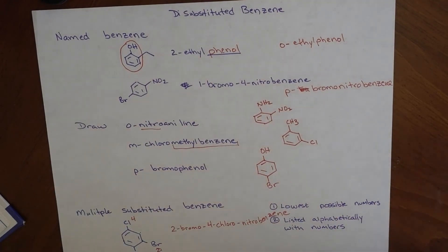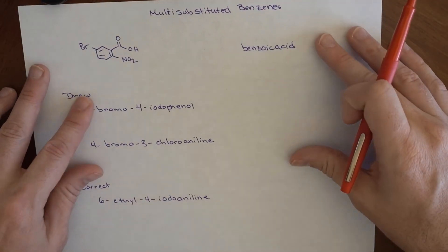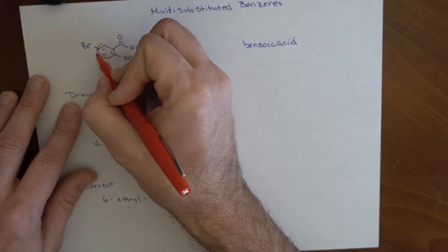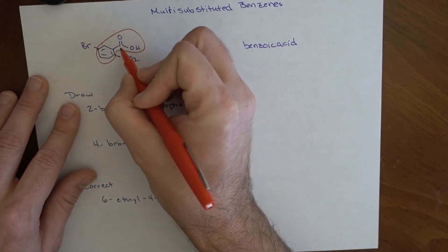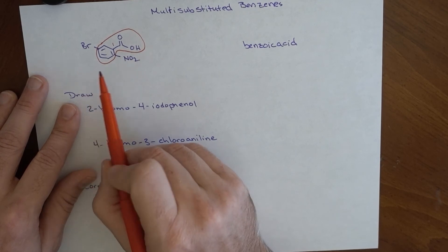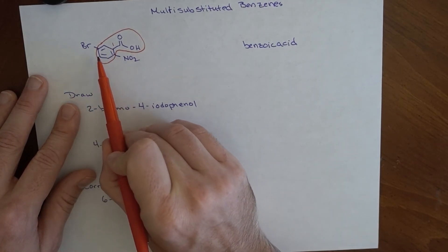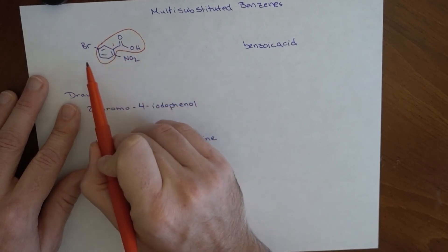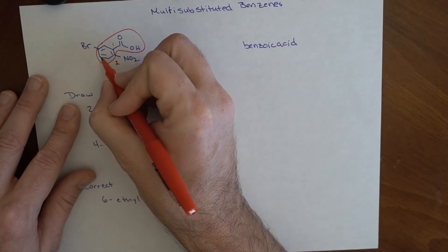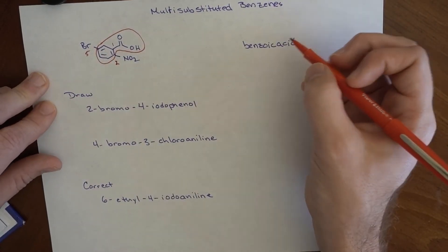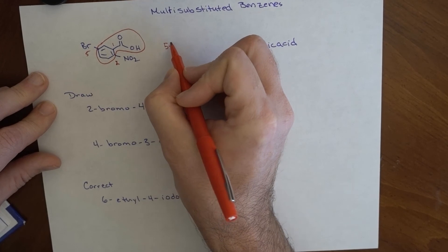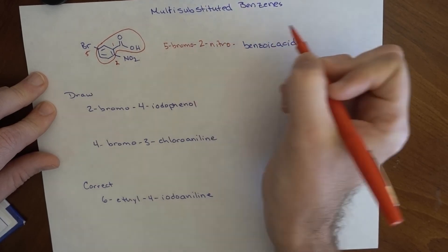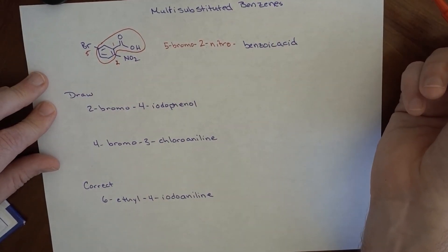Again, if we can build something into the name, for example, if we've got benzoic acid in this molecule, right here, this is a molecule that contains benzoic acid. This automatically gets the one position. This would be 1, 2, 3, 4, 5, or 1, 2, 3, 4, 5, 6. We're going to number in this way. So this is our 2, 3, 4, 5. This would become 5-bromo-2-nitro-benzoic acid. That would be the name for that one.